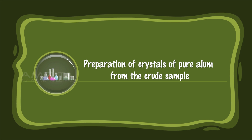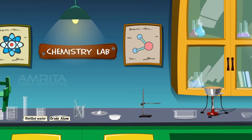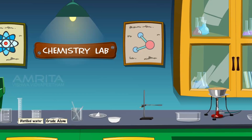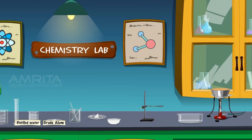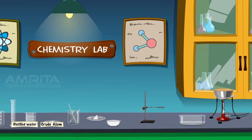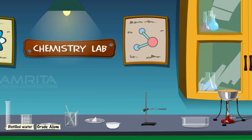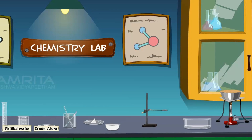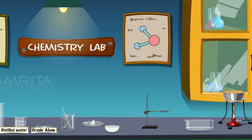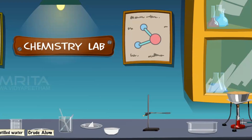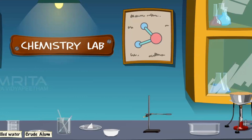Preparation of crystals of pure alum from the crude sample. We require: crude sample of potash alum, distilled water, ethyl alcohol cold water mixture, beakers, measuring cylinder, spatula, glass rod, china dish, funnel, filter papers, iron stand with clamp, crystallizing dish, trough, and sand bath.